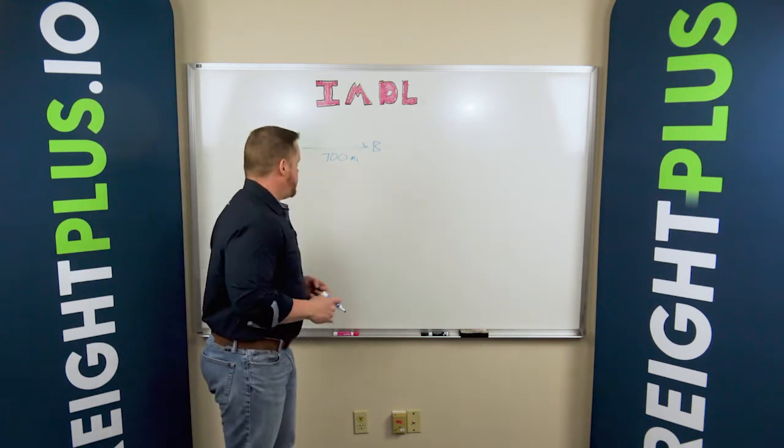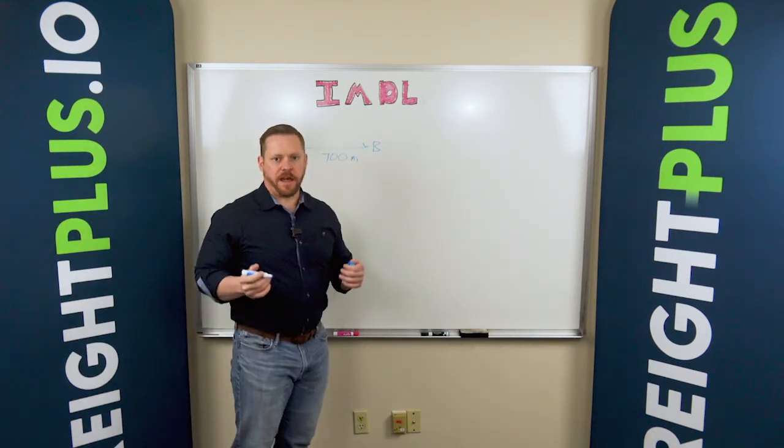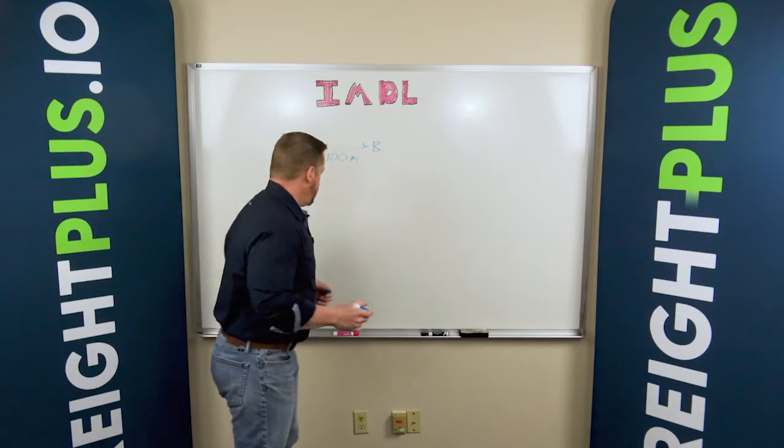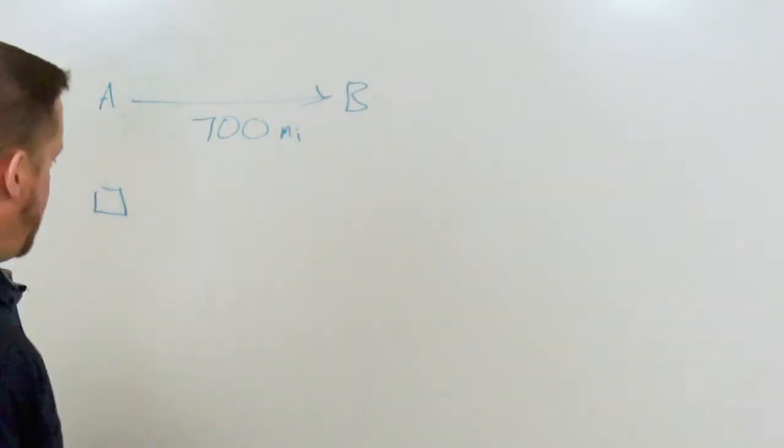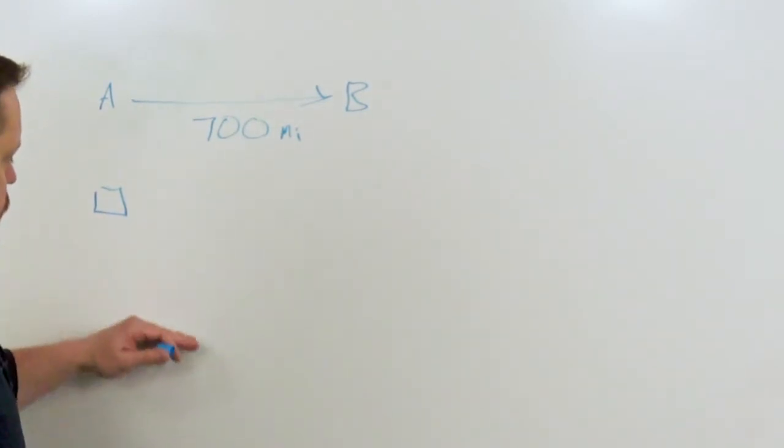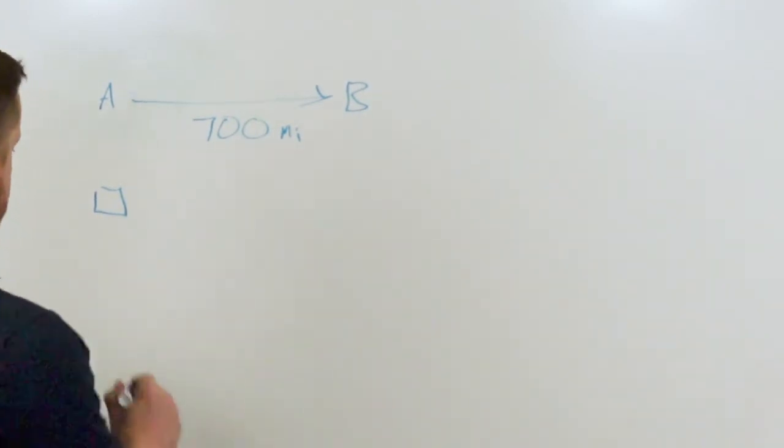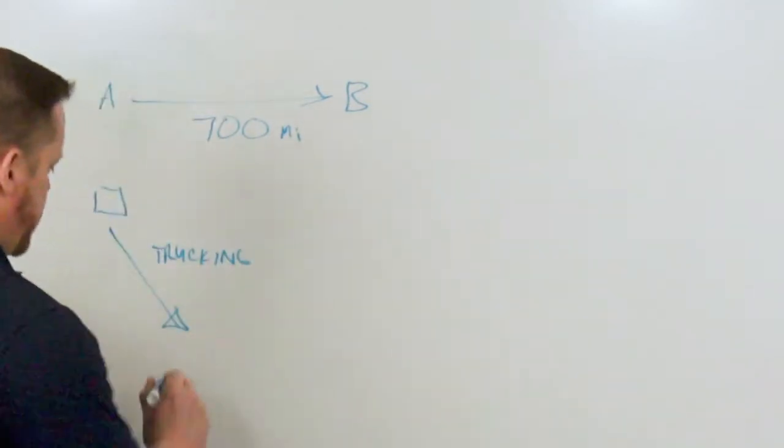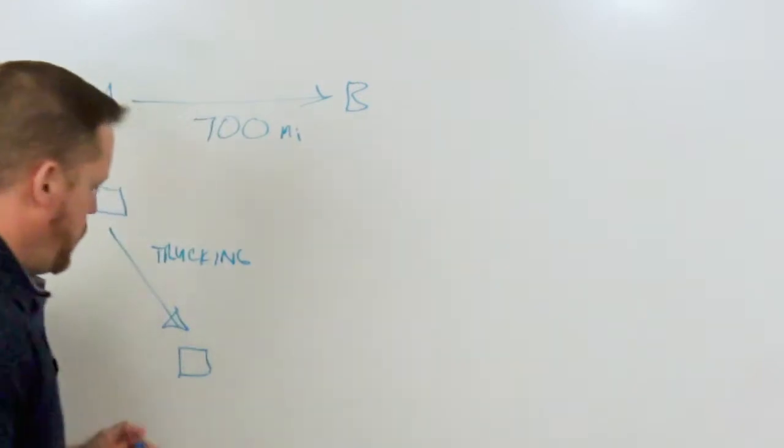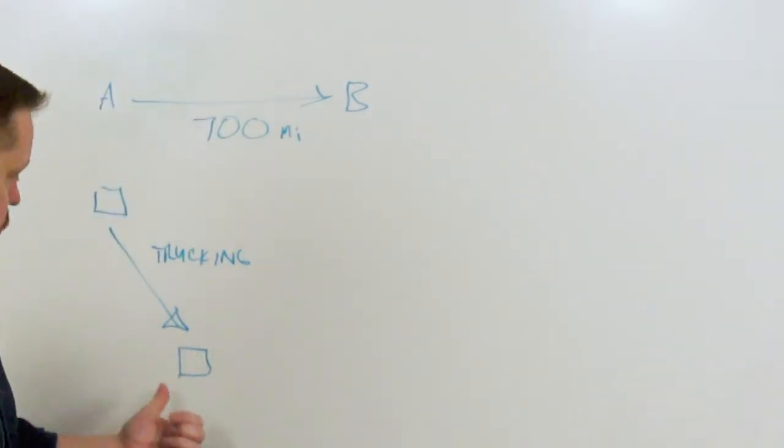Now how does an intermodal shipment actually operate in a network? So if I'm a shipper in a location, I'm making my product, I need to get that product to a rail ramp. So here's our first trucking component. Now it gets to the origin rail ramp where it gets loaded onto an actual train.